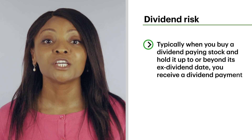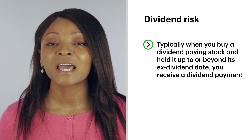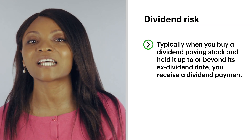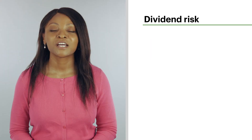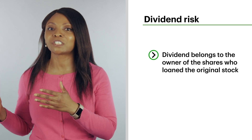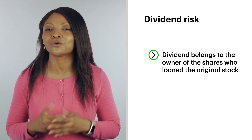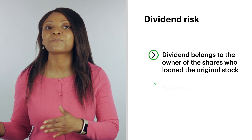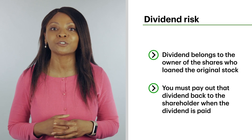Another important thing to go over is called dividend risk. Usually when you buy a dividend-paying stock and hold it up to or beyond its ex-dividend date, you receive a dividend payment. But if you short a company with a paying dividend, then that dividend belongs to the owner of the shares who loaned the original stock to you in the first place. This means you need to pay the dividend back to the shareholder when the dividend is paid. This can catch many investors off guard — it can be surprising to see a dividend amount taken out of your account, so keep this in mind if you're looking to short a dividend-paying stock.